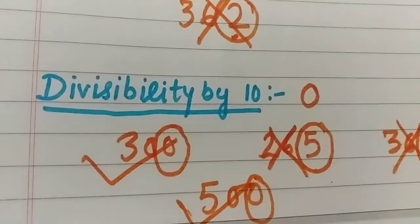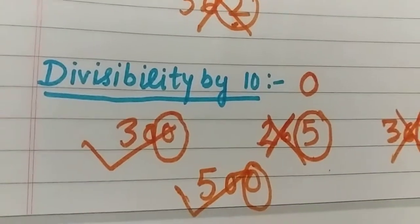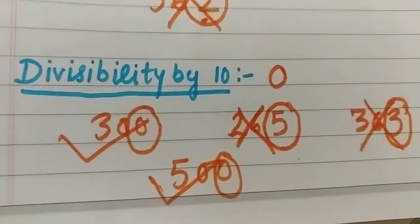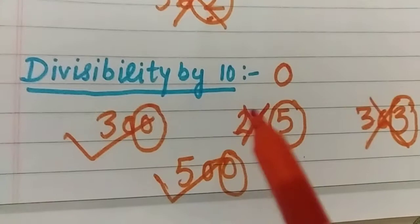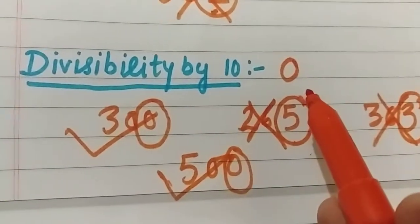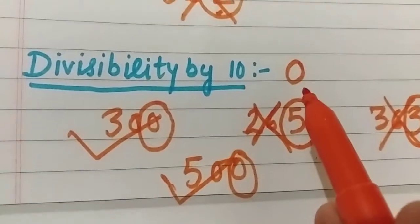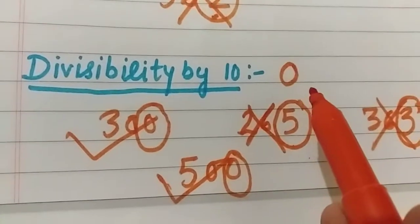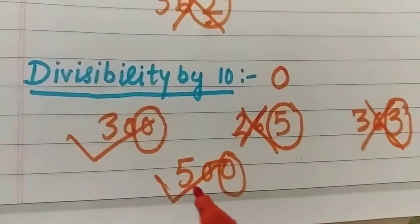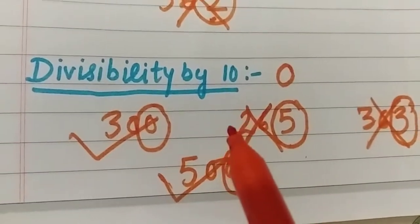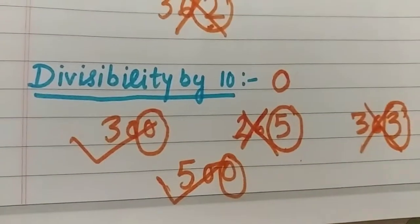For example, 500 — the ones place digit is 0, so 500 is divisible by 10. This is the divisibility rule of 10: if the ones place digit is 0, the number is divisible by 10.